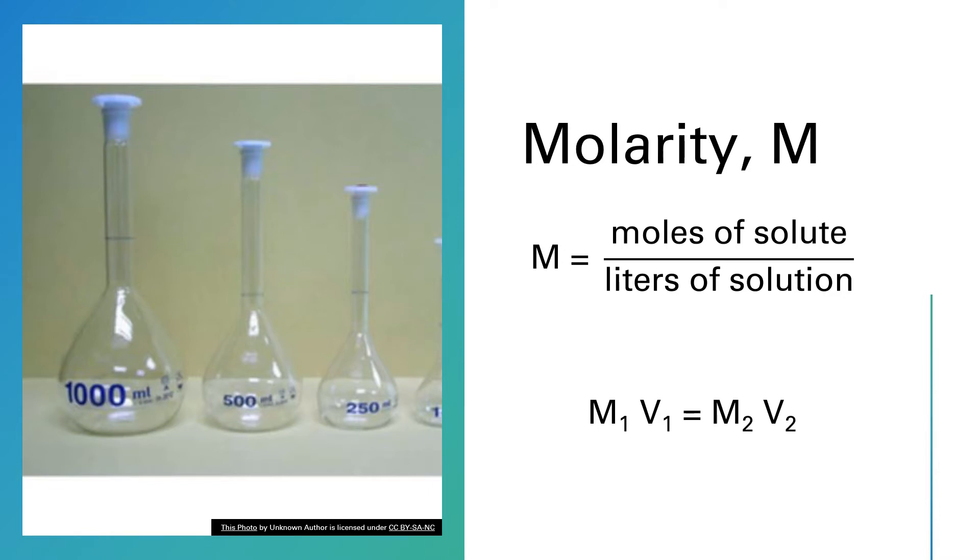That mark appears on the neck of the flask and when the bottom of the meniscus of the solution hits that mark on this far left volumetric flask, the volume of that solution is exactly one liter or 1000 milliliters.